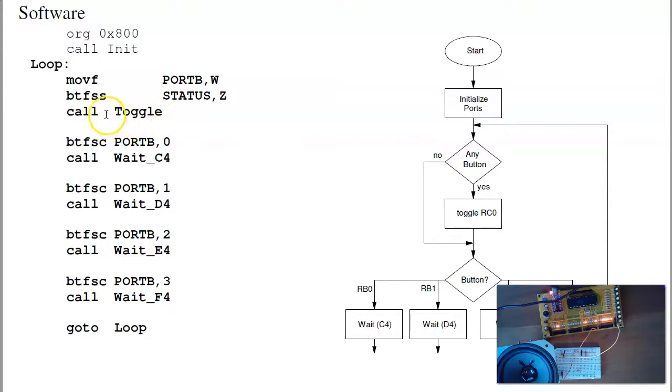So the way to do that in software is I'm going to move port B to W. The only reason I'm doing that is I want to check was that equal to zero. Then I'm going to check the zero bit of status. If it was set, meaning it was zero, the button was not pushed, I'm going to skip over this command. Otherwise, I'll toggle port C pin zero. I'll then wait. If I hit port C pin zero, I'll wait 19,000 clocks. If port B pin one is pushed, I'll wait 17,000 clocks, and so on. And repeat.